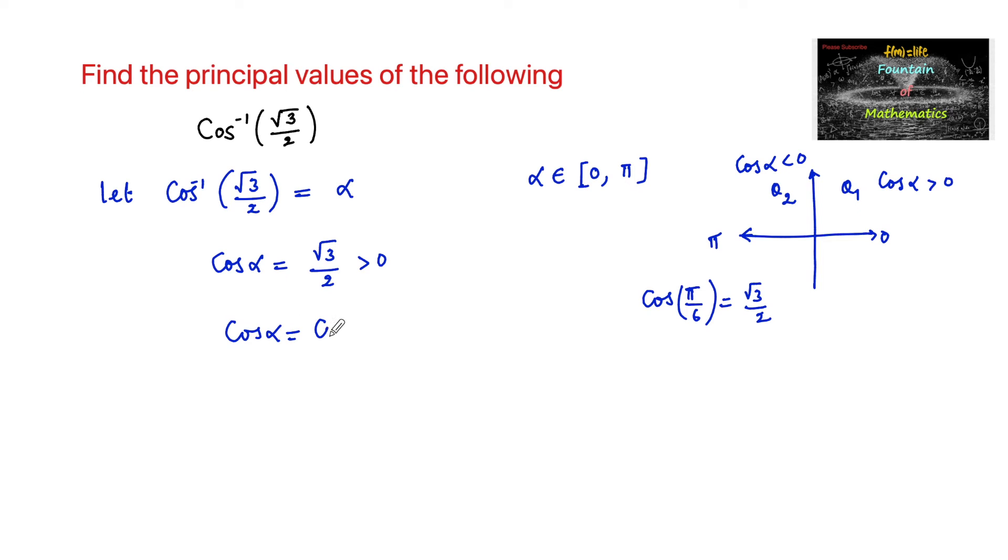So we can write cos alpha is equal to cos pi by 6. Therefore alpha is equal to pi by 6, which belongs to the first quadrant, that is 0 to pi principal range. And hence we can say that cos inverse of root 3 by 2 is equal to pi by 6 is the answer.